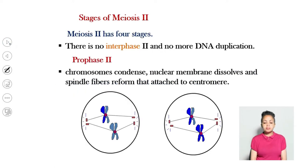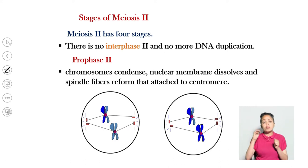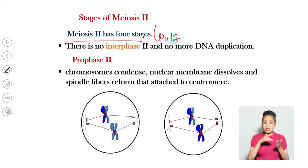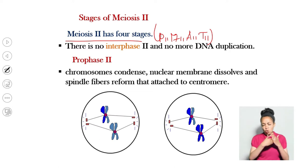Stages of meiosis II. Meiosis II has the same stages as meiosis I. The same four stages are found here too: prophase II, metaphase II, anaphase II, and telophase II. Each of these stages is part of meiosis II.